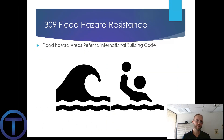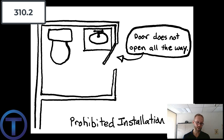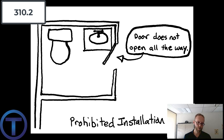Section 309 provides information about flood hazard resistance, referring to the International Building Code for more details. Section 310 covers washroom and toilet requirements, requiring ventilation — either a bathroom exhaust fan or an openable window. It also covers fixture locations, requiring that fixtures not block doors or openings so you can access those fixtures.